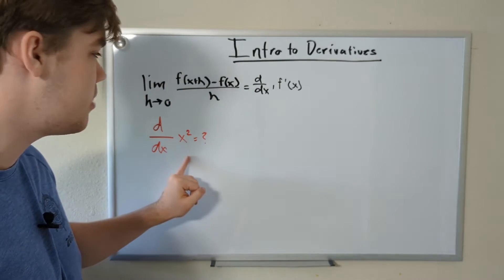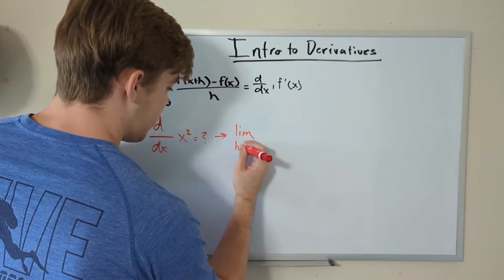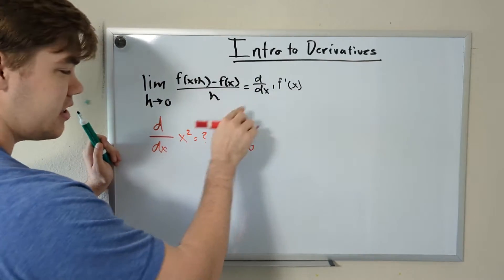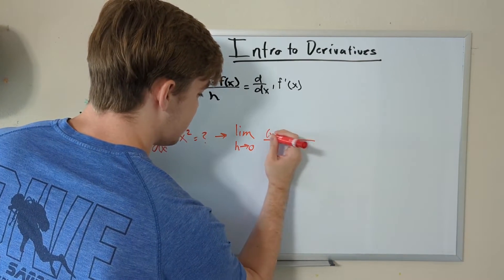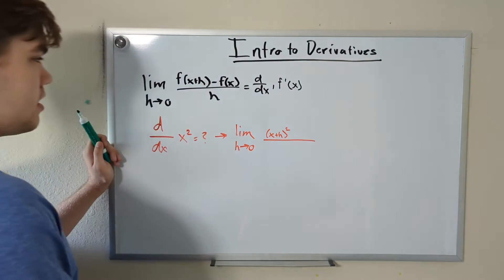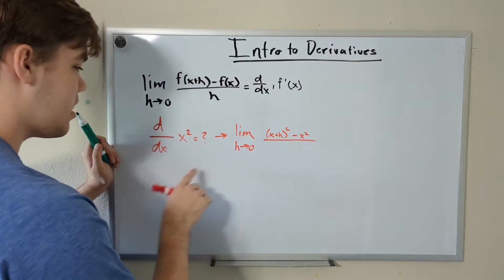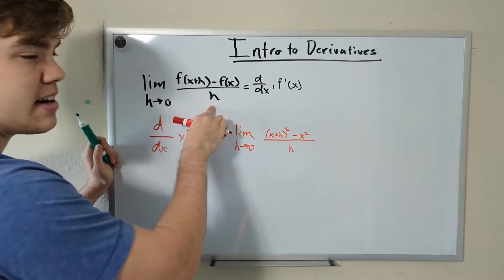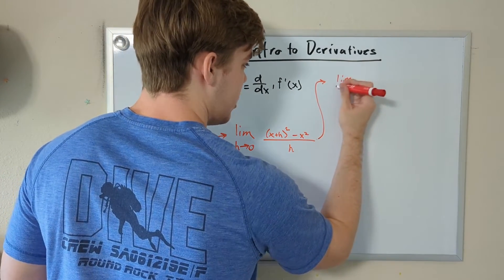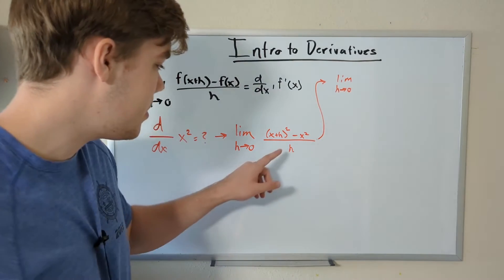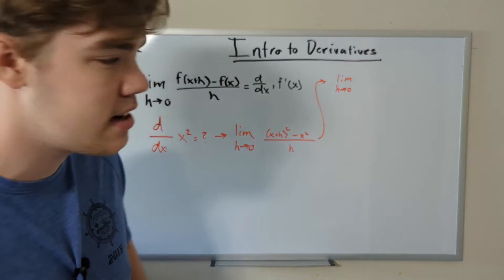Let's plug all of these values into our derivative equation. This becomes the limit as h approaches 0 of f(x+h) — which is our equation but with x replaced by x+h — so in the numerator we have (x+h) squared. Then we subtract f(x), which is just minus x squared, and on the bottom is just h. Now remember, (x+h) squared is not just x squared plus h squared — this is (x+h) times (x+h). Don't forget to do that or you may get these equations wrong.